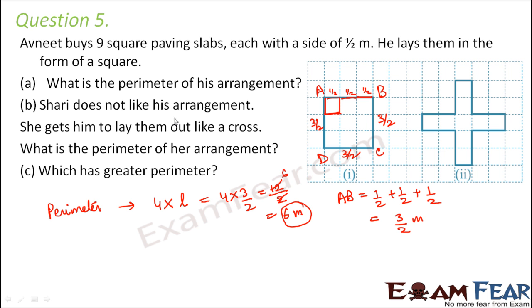Now Shari does not like his arrangement. She gets them to lay them out like a cross. So this was Avneet's arrangement and this was Shari's arrangement. So how did Shari arrange it? She arranged it in the shape of this cross.